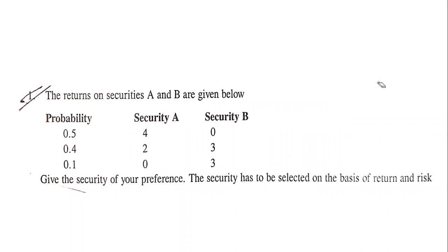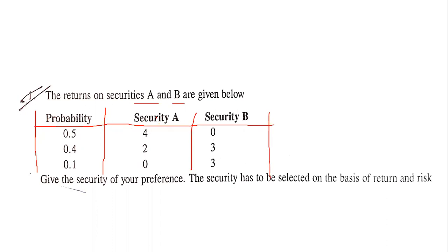This is the problem on calculation of risk and return. We have already studied the theory part, so now let's calculate how individual securities are evaluated in terms of risk and return. The given data has two securities: Security A and Security B, with probabilities representing the chances of occurrence. Both securities are operating in the same market condition, so the probability of occurrence will be the same for both.